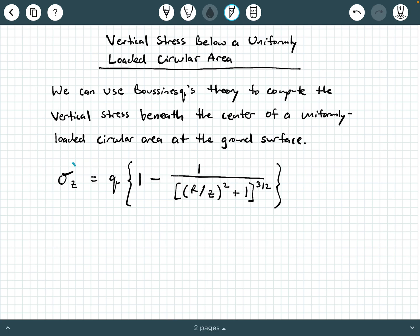So the way it reads is sigma sub z equals q times this big quantity right here which is 1 minus 1 divided by the term r over z squared plus 1, and then that r over z squared plus 1 collectively is raised to the 3 halves power.